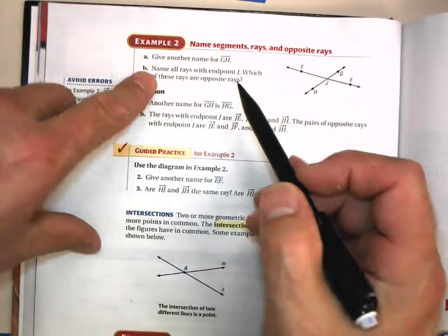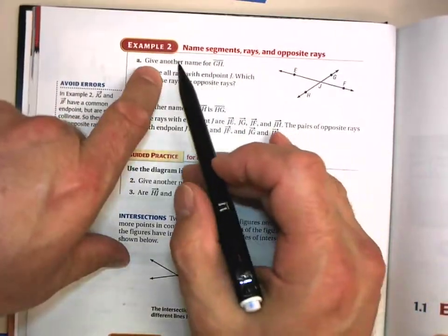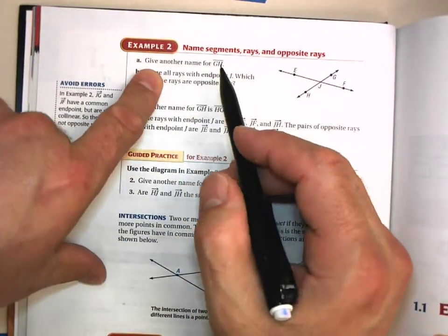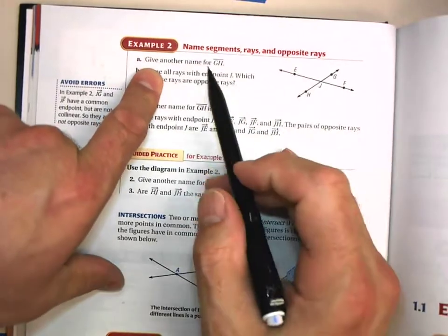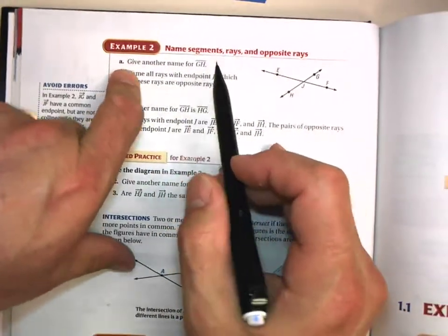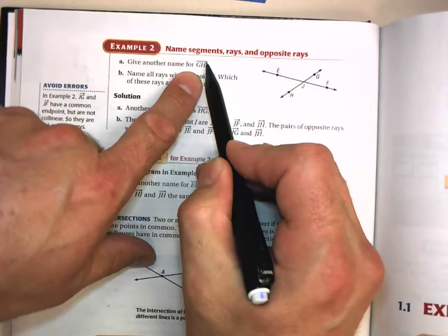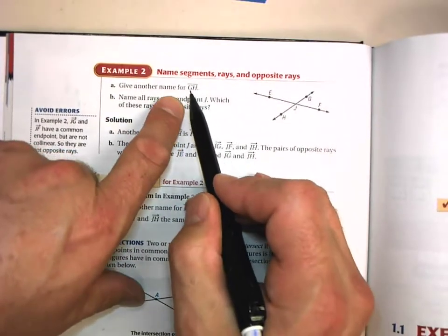Example two, and this is all that you have. This is getting you ready for your guided practice, for example two. So give another name for segment. There's no arrowheads on there, so segment GH.